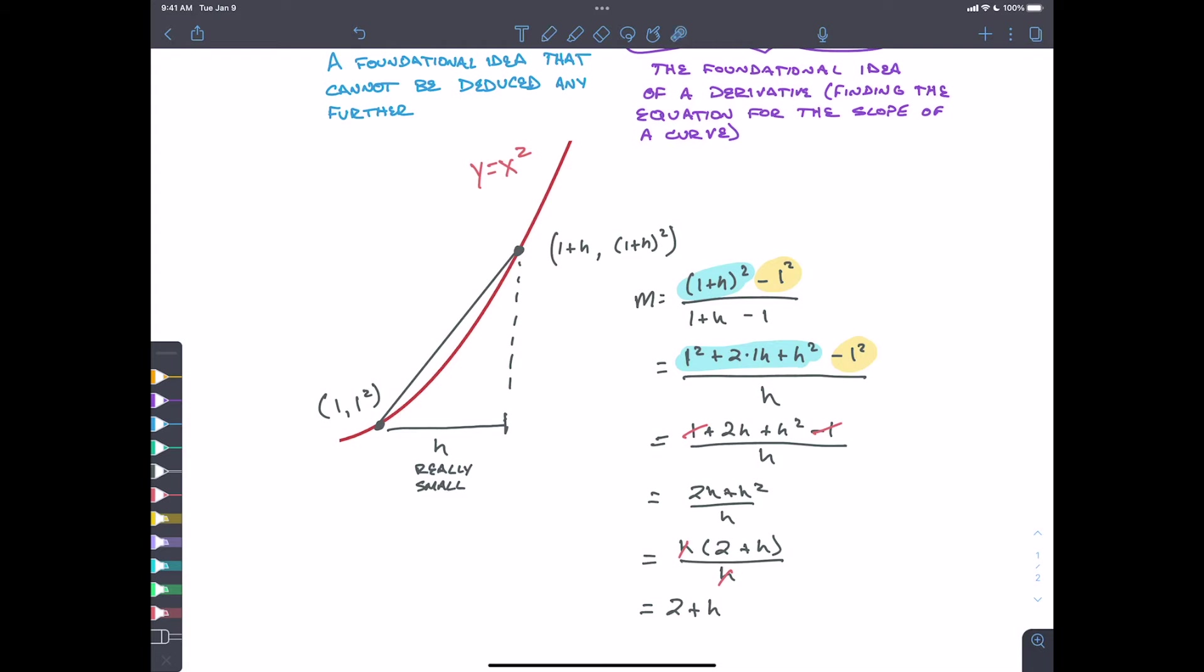So that's the slope at this point. But remember h is infinitely small. It's really, really, really small. So really our slope is going to be two.